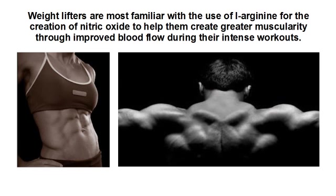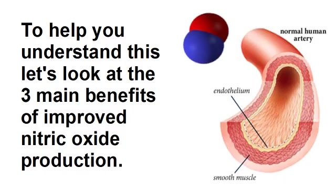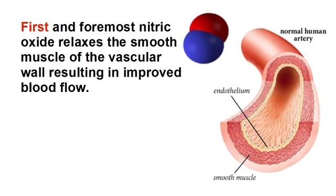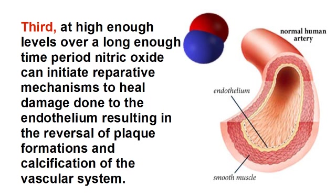Weight lifters are most familiar with the use of L-arginine for the creation of nitric oxide to help them create greater muscularity through improved blood flow during their intense workouts. And while this is helpful, it is still missing a key component that could power their results to even greater levels. Let's look at the three main benefits of improved nitric oxide production. First and foremost, nitric oxide relaxes the smooth muscle of the vascular wall, resulting in improved blood flow. Second, nitric oxide helps keep blood platelet cells from sticking together, which lowers the risk for strokes and heart attacks. Third, at high enough levels over a long enough period of time, nitric oxide can initiate reparative mechanisms to heal damage done to the endothelium, resulting in the reversal of plaque formations and calcification of the vascular system.